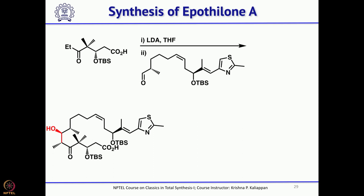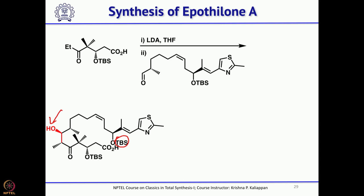What remains is removal of protecting groups and then macrolactonization. However, there is a free hydroxyl group that must be protected, otherwise an undesired lactone will form. Both the carboxylic acid and the hydroxyl group were protected — as TBS ester and TBS ether respectively.